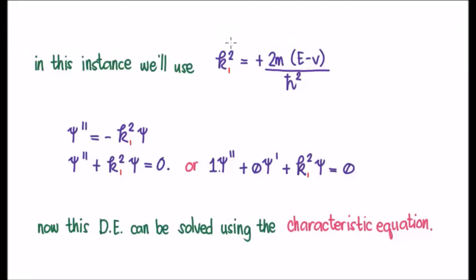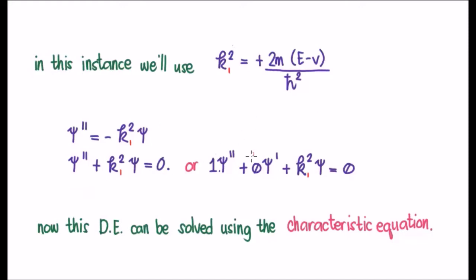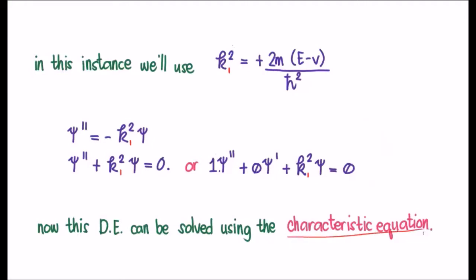I'm going to solve the time-independent Schrödinger equation, whereby we're using the coefficient k₁ squared. We can write it here, or we can bring everything to the left-hand side and have a homogeneous equation. We can note explicitly that we have a zero coefficient on the first derivative term, so we have no first derivative. This sort of differential equation can be solved using what's known as the characteristic equation.